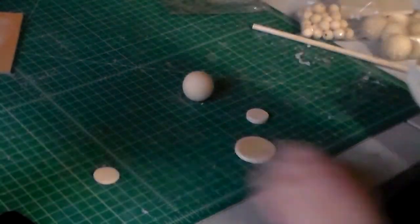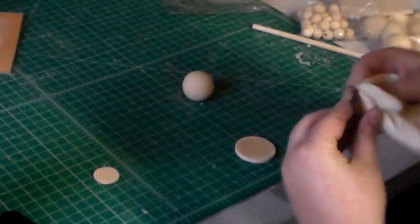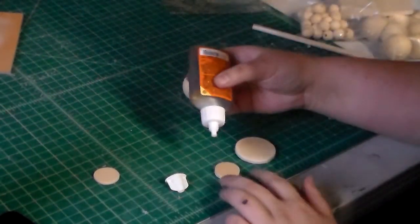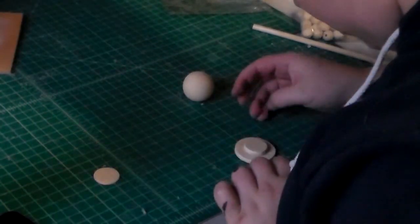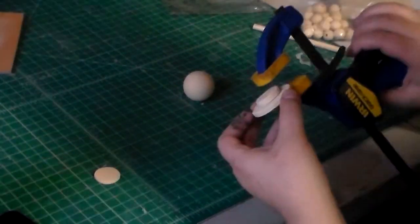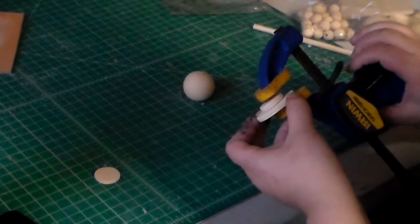Once you have everything smooth, glue the two 1 inch discs to the two 1.5 inch discs and one spare 1 inch disc to the bottom of the knob. Make sure everything is centered before you leave it to dry.